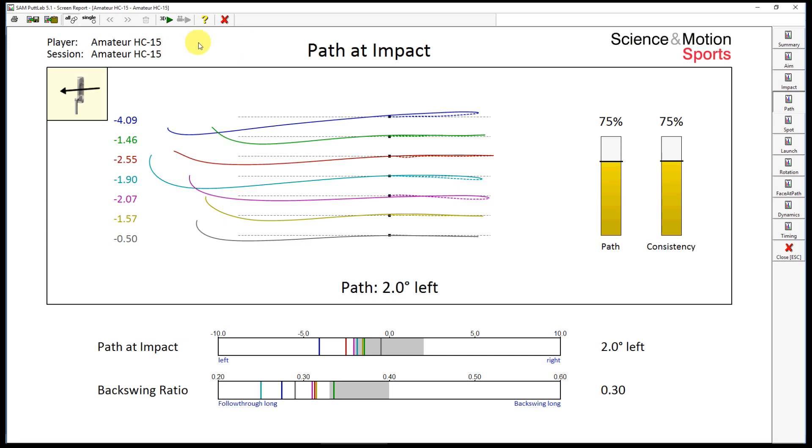For this 15 handicap golfer, the path direction in average is 2 degrees to the left. If you look at the single putts, we see that the direction varies between 0.5 degrees to the left and more than 4 degrees to the left, so the consistency is a little bit down.